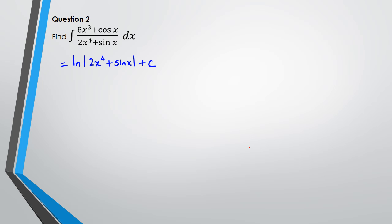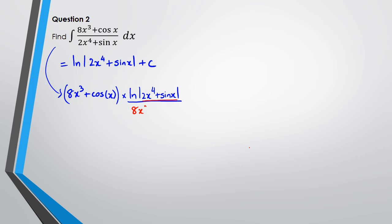Another way to see this: you could write it as the integral of (8x³ + cos x) divided by (2x⁴ + sin x), which gives you ln(2x⁴ + sin x) divided by the differentiation of whatever is inside the ln function — that's 8x³ + cos x — and those two things cancel out, leaving us with ln(2x⁴ + sin x) + c.